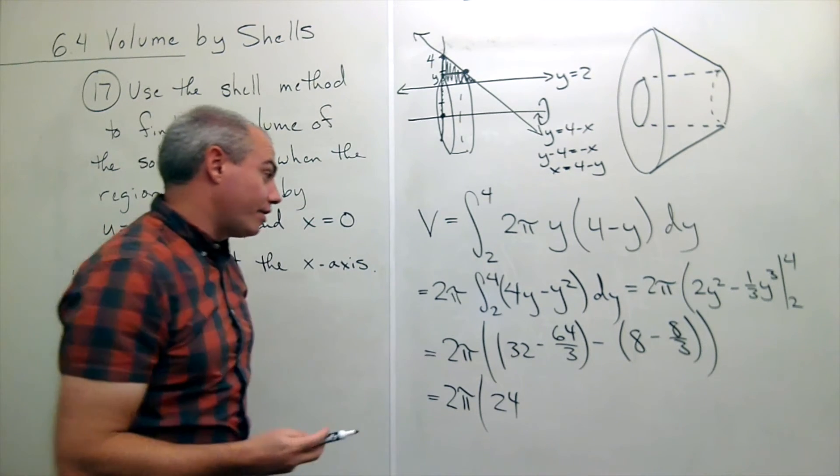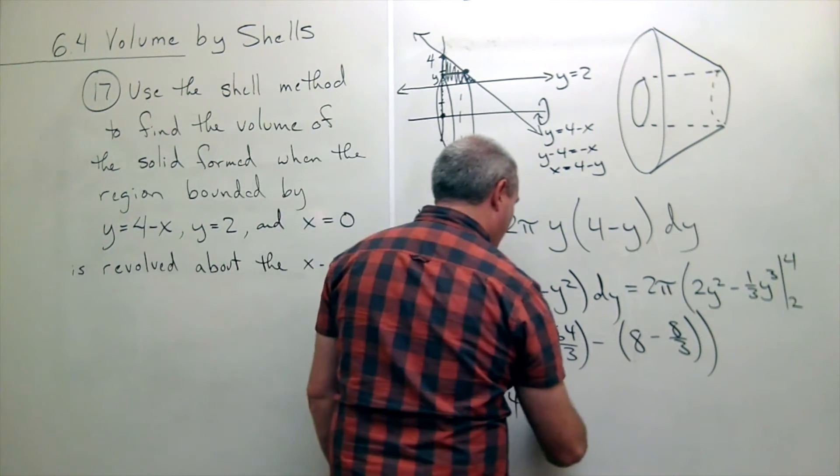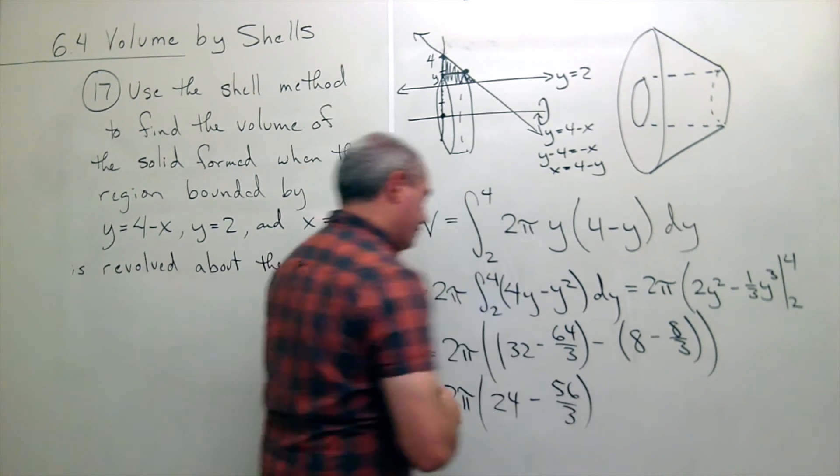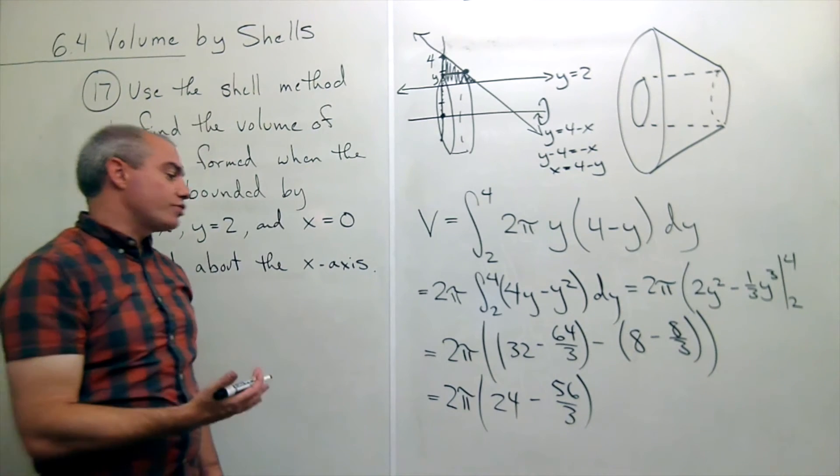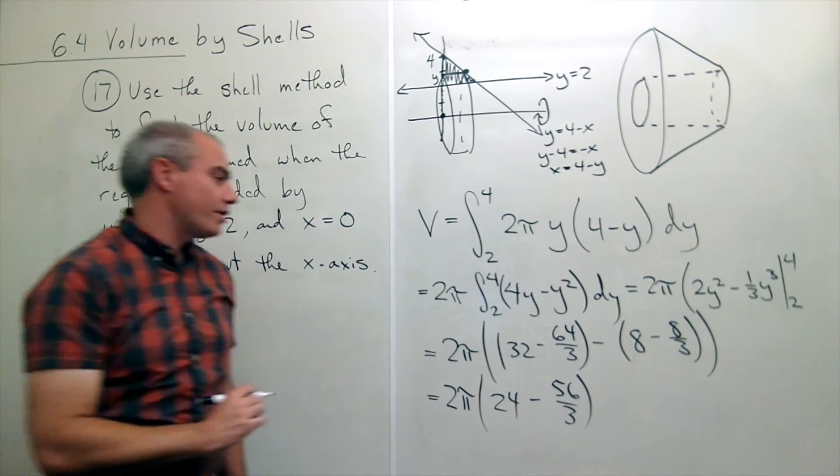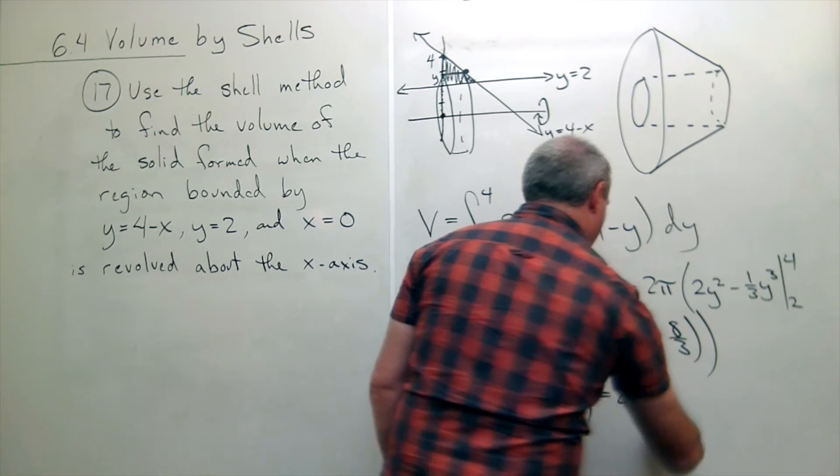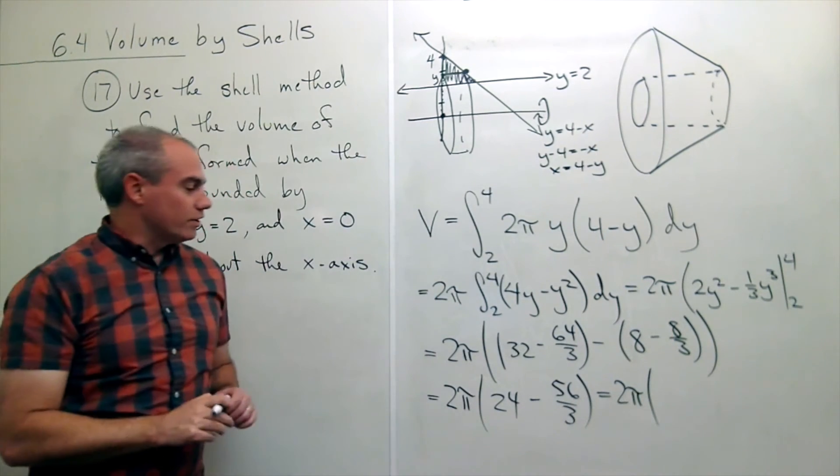And then I get negative sixty-four thirds plus eight-thirds. If I add eight-thirds, I suppose I get minus fifty-six thirds. Now I need to take twenty-four minus fifty-six thirds. I could rewrite twenty-four in thirds.